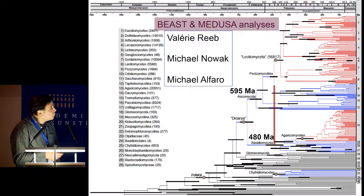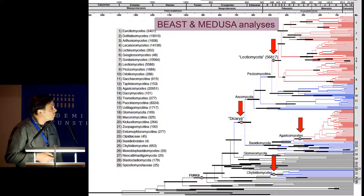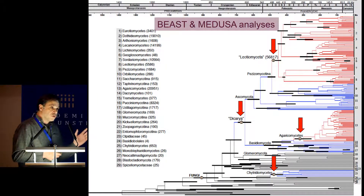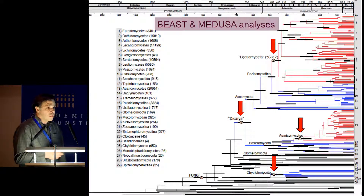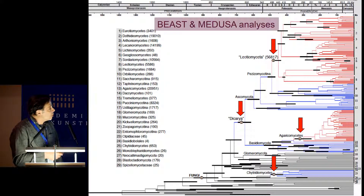Using Medusa, we discovered four major drastic accelerations in diversification rates, and therefore you can see these as radiations. The most important one of those is within the Pezizomycotina — the Lecanoromycota — which I will refer to as the Lecanoromycota radiation.